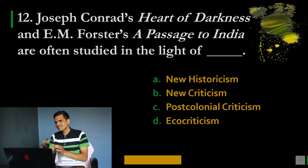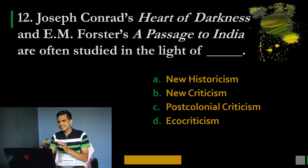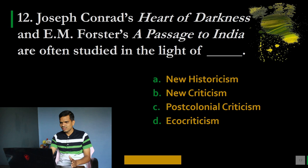Question number 12: Joseph Conrad's Heart of Darkness and E.M. Forster's A Passage to India are often studied in the light of which theory? Options: A. New historicism, B. New criticism, C. Post-colonial criticism, D. Ecocriticism. The answer is C, post-colonial criticism. These texts are studied in the light of post-colonial theory, discussing various features and traits of post-colonial literature.